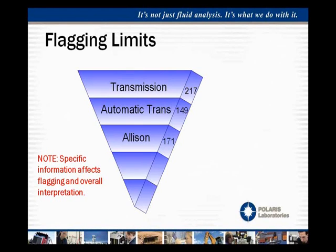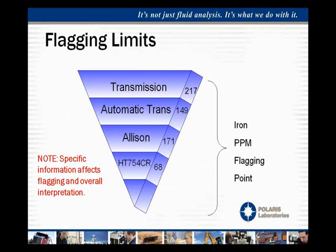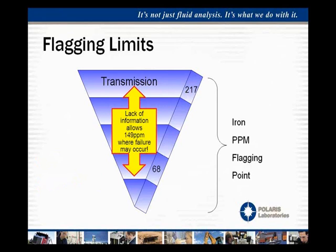If we know it's an Allison transmission, they generate a little bit more iron, so it's okay to have more — we might flag it at 171 parts per million, giving a little more leeway. But if we know it's specifically an Allison HT754CR, we now know we're going to flag it at 68 parts per million of iron — that tolerance just got a lot tighter. By not knowing that information, if we only knew it was a transmission in general, there is a very wide range of parts per million that could have gone undetected and caused a failure.